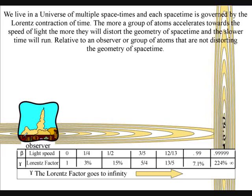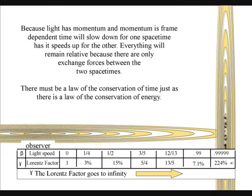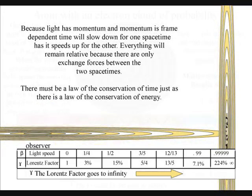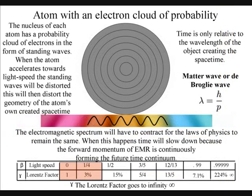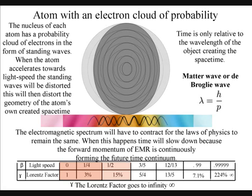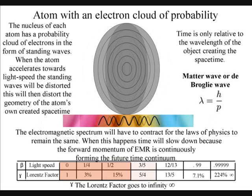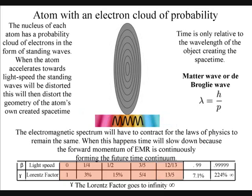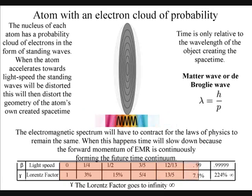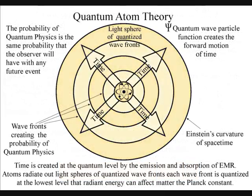The accelerating object will distort the geometry of its own space-time, from the smallest atom to the entire electromagnetic spectrum will have to contract for the laws of physics to remain the same. When this happens, time will slow down, because the forward momentum of electromagnetic radiation is continuously forming the future probability of the time continuum.